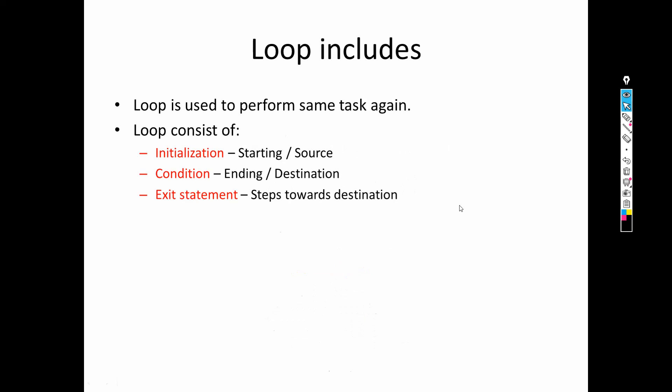In the previous discussion we have already seen that any particular loop — whether it is a while loop, for loop, or do-while loop — consists of three things: initialization, condition, and exit statement. Initialization is the starting condition, condition specifies the destination, and exit statement specifies how you can approach towards your destination. We have already discussed this in previous videos, so we will not go into more detail here.